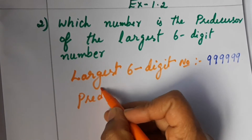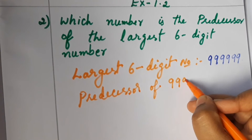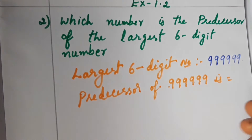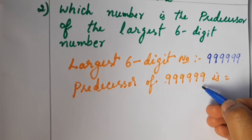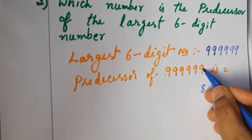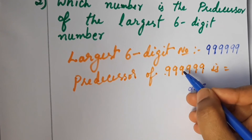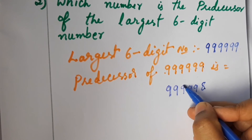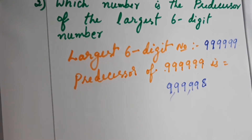Predecessor means the before number or previous number. So predecessor of 9,99,999: we have to reduce minus one. We can write directly — nine becomes eight in the one's place. Then the remaining digits stay as nine. So the answer is 9,99,998 — nine lakh, ninety-nine thousand, nine hundred and ninety-eight.